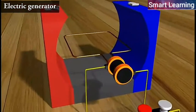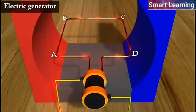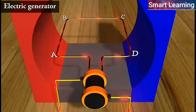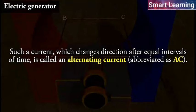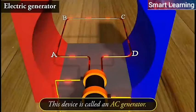Thus, after every rotation, the polarity of the current in the respective arms changes. Such a current which changes direction after equal intervals of time is called an alternating current, abbreviated as AC. This device is called an AC generator.